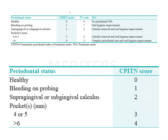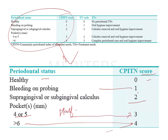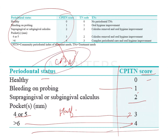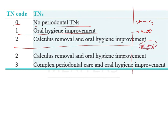Now looking at the interpretation of periodontal status and CPITN scores: if periodontal status is healthy, score is 0; bleeding on probing is score 1; calculus present is score 2; pocket depth 4–5 mm with half-visible red band is score 3; pocket depth greater than 6 mm is score 4. Each score has a respective treatment code: treatment code 0 means no periodontal treatment needed; code 1 means oral hygiene improvement; code 2 means calculus removal for bleeding and calculus cases.